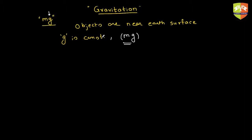But now we are dealing with scenarios where objects are probably very far away from the Earth, and because of that the acceleration due to gravity G may not be a constant. We are going to discuss such scenarios. Gravitation is one of the oldest branches of science.